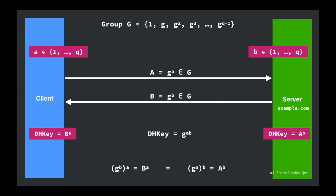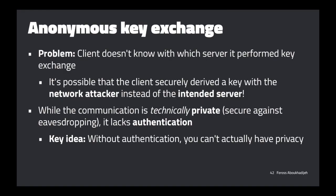But there's a problem: the client has derived a DH key it believes the server also derived, and they can communicate securely. But the client doesn't know who the server is — it could be the network attacker. This is called anonymous key exchange. The communication is technically private, but it's private to a party we don't know. Without authentication, you can't actually have the privacy property we want.